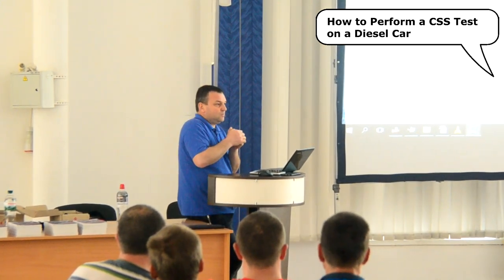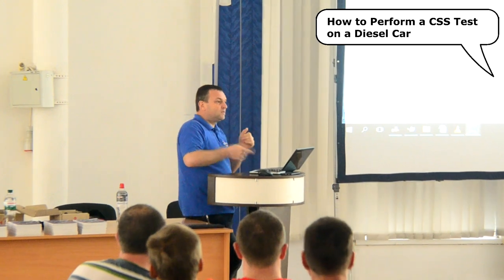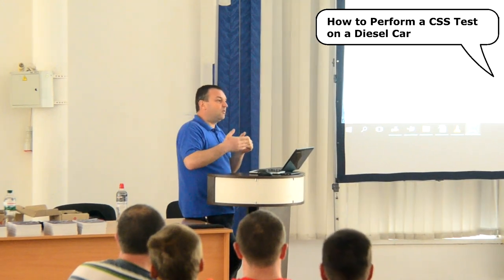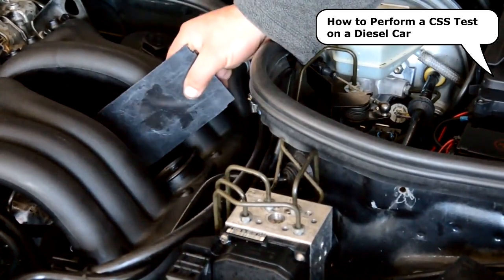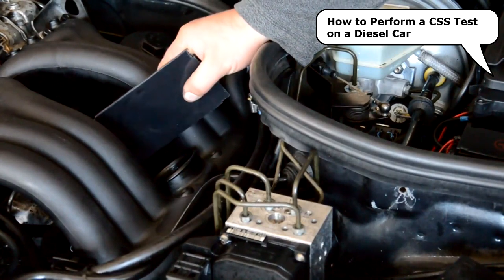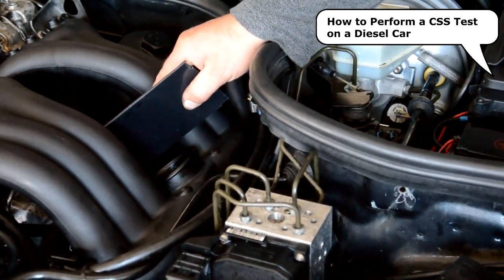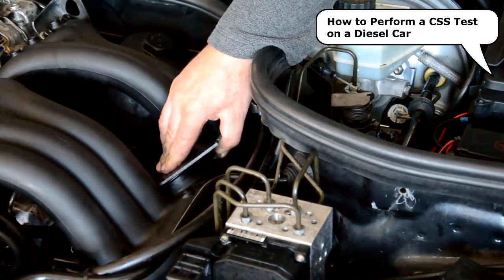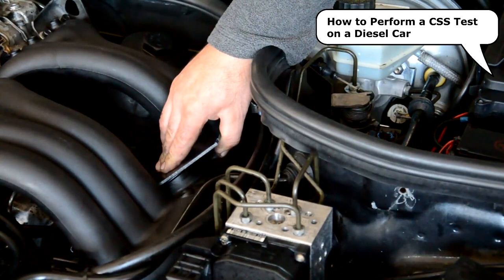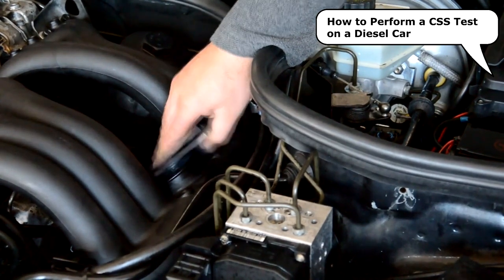If the intake manifold is not equipped with a throttle valve to shut off the engine at the last stage of measurement, the airflow entering the intake track should be shut off manually. It is important to keep it closed until the engine comes to a complete stop.